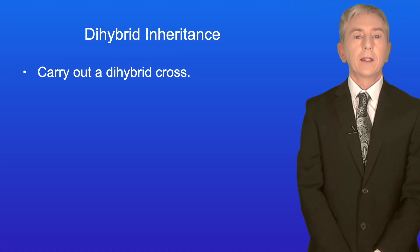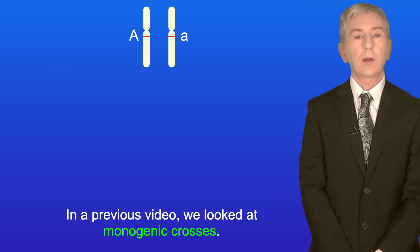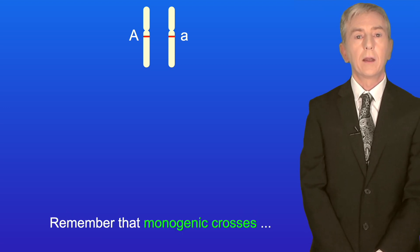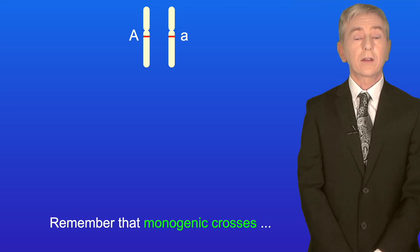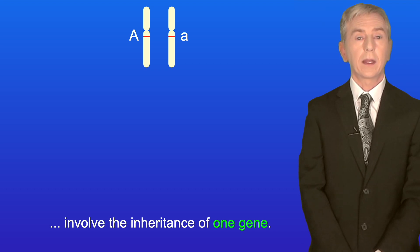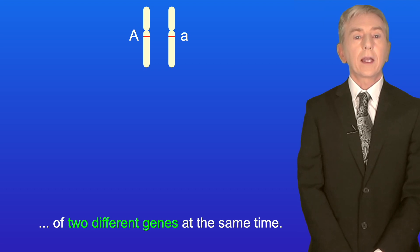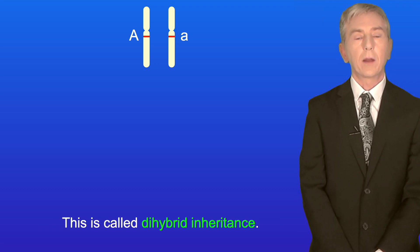Hi and welcome back to Free Science Lessons. By the end of this video you should be able to carry out a dihybrid cross. In a previous video we looked at monogenic crosses, and remember that monogenic crosses involve the inheritance of one gene. In this video we're looking at how to investigate the inheritance of two different genes at the same time. This is called dihybrid inheritance.